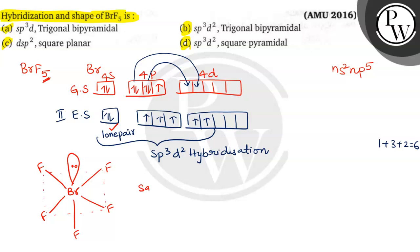This is called square pyramidal. And what is the hybridization? SP3D2 hybridization and square pyramidal due to the presence of the lone pair of electrons. So which option is correct? Option D, SP3D2 hybridization and square pyramidal.